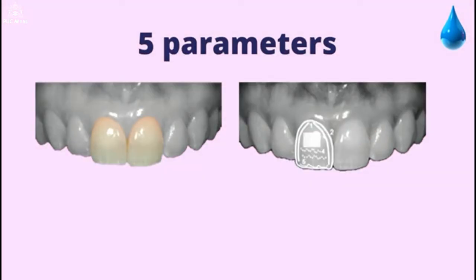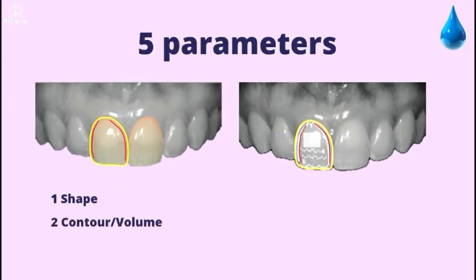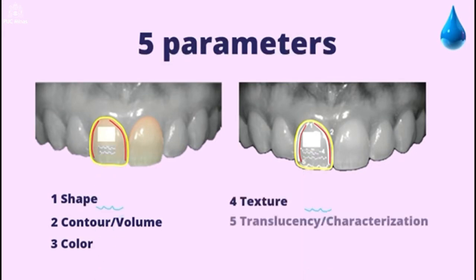The white aesthetic index will evaluate the implant crown and is based on the following five parameters: one, shape; two, contour and volume; three, color; four, texture; five, translucency characterization.